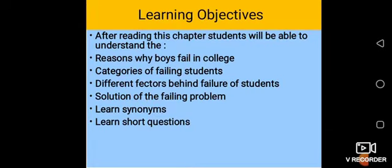First of all, I will describe the learning objectives. After reading this chapter, students will be able to understand the reasons why boys fail in college, categories of failing students, different factors behind the failure of students, the solution of the failing problem. They will also learn synonyms and short questions.